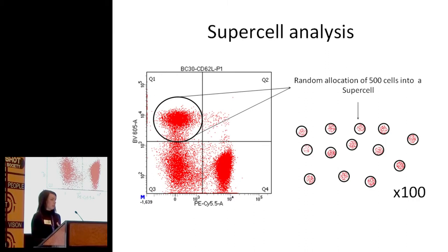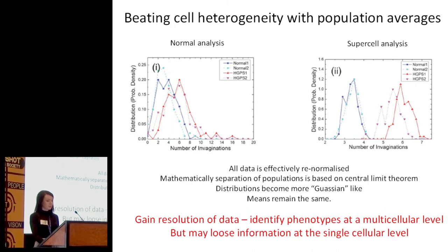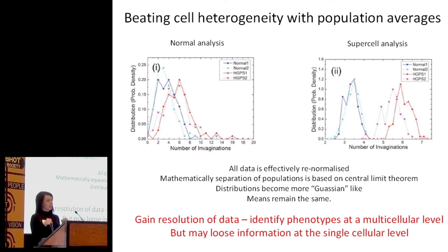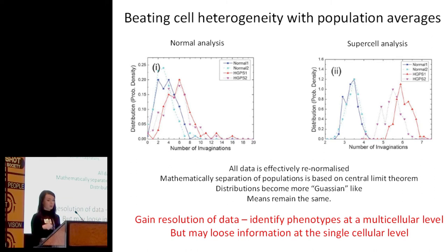We do this up to 100 times, so we end up with 100 different supercells. What this does to the data is it beats cell heterogeneity by using population averages. You can see on the left the normal analysis — a disease group in red and a healthy group in blue — and there's a large amount of overlap between those two populations. When you apply the supercell analysis, you get distinction between those two populations. We're effectively renormalizing that data using mathematics — the central limit theorem — so these distributions become more Gaussian-like. But the means remain the same; we're not changing the data, we're just gaining resolution so we can distinguish different disease groups.